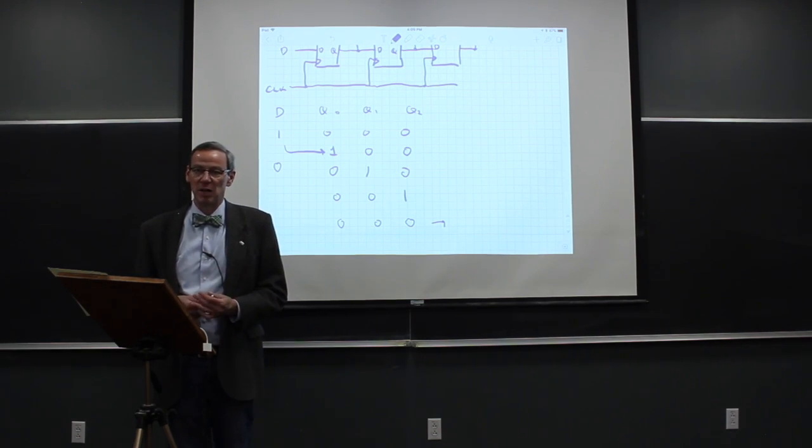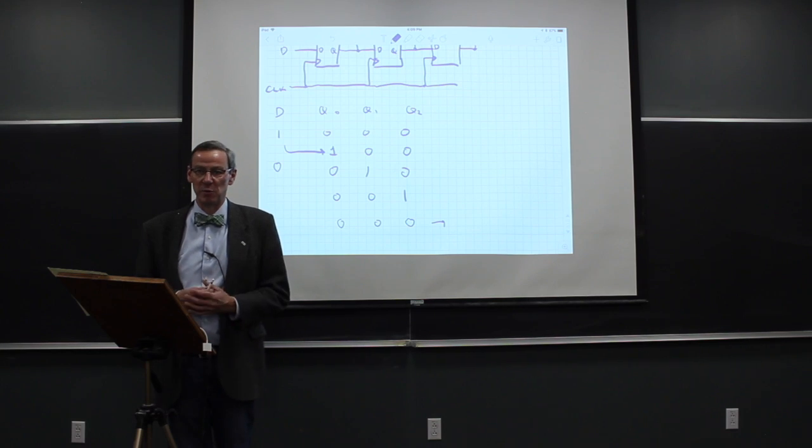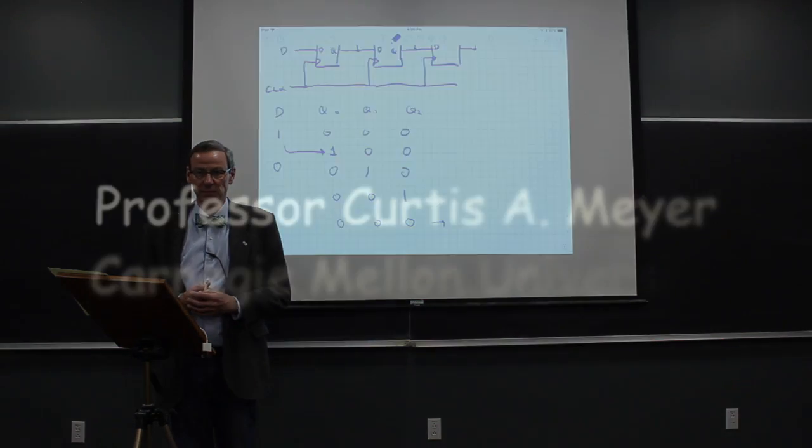The D flip-flop is used as a shift register, and the JK flip-flop is often used as a counting circuit or frequency division circuit. Both are very useful in computers for various things. Thank you.